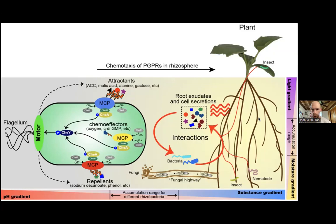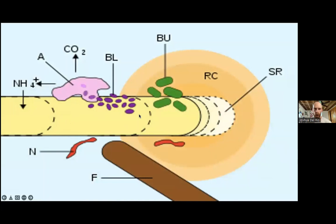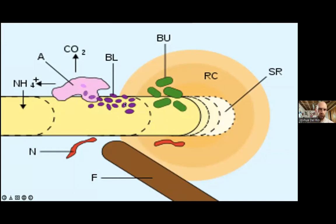This image shows a rhizoplane — a single plant root with fungal hyphae, bacteria, amoeba, and nematodes present. The plant root secretes sugars attracting or repelling certain organisms. This illustrates biocontrol: if beneficial bacteria are being consumed by amoeba, there are fewer bacteria to occupy protective space on the root, potentially allowing pathogenic organisms to penetrate and cause harm.